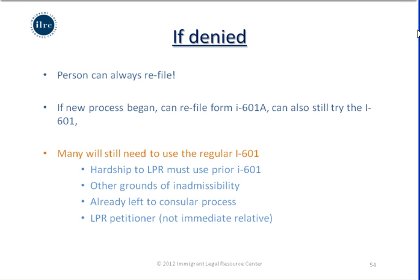Many people will still need to use the regular I-601 waiver — for example, if hardship is to a lawful permanent resident, if there are other grounds of inadmissibility to be waived besides unlawful presence, if they have already left the United States for consular processing, if their interview was scheduled prior to January 3rd of this year, or if the petitioner is an LPR and therefore the applicant is not an immediate relative.